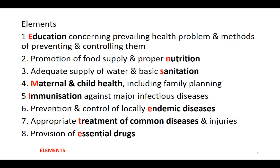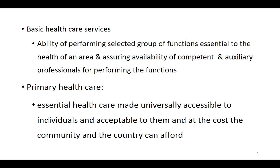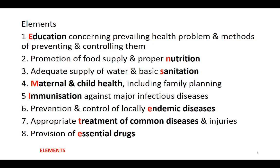The seventh element is appropriate treatment of common diseases and injuries. The eighth is provision of essential drugs. These are the eight elements of primary health care. Primary health care is essential healthcare made universally accessible to individuals — accessible, acceptable, and at a cost the community and country can afford, the cheapest cost. If asked to give an example for each element in the exam, you should be able to do so based on this definition.